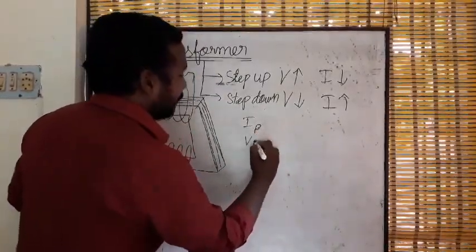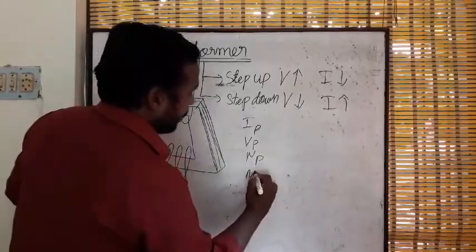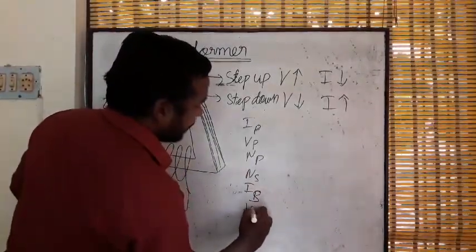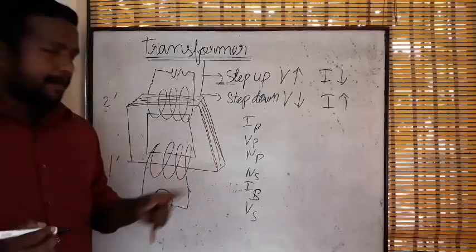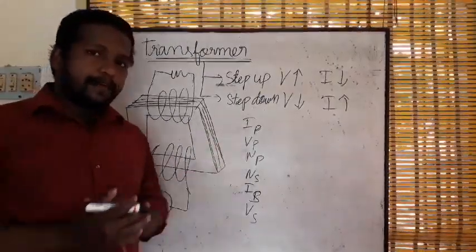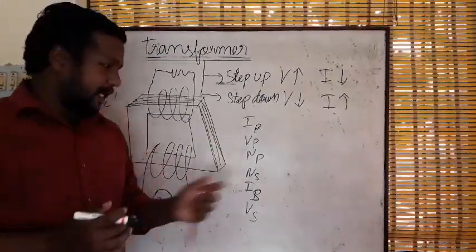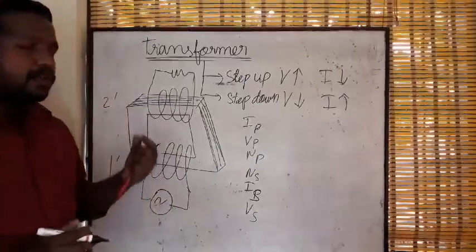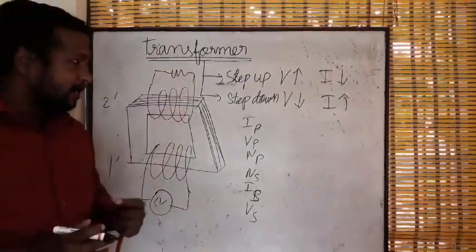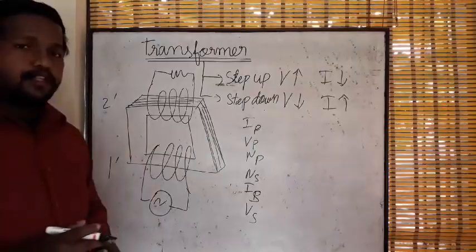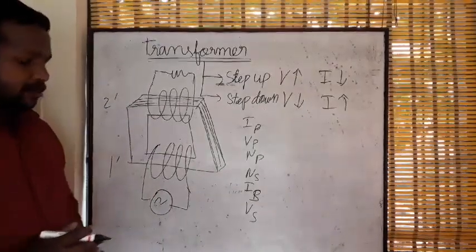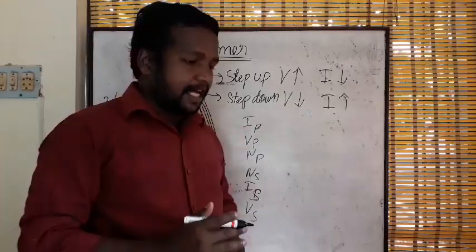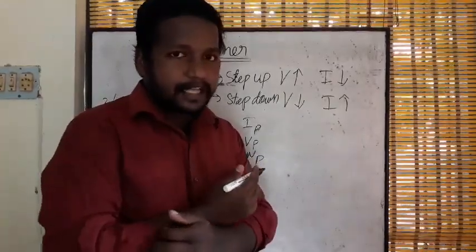The variables are: Ip — current in the primary coil, Vp — voltage in the primary coil, Np — number of turns in the primary coil, and Ns, Vs, Is for the corresponding secondary coil quantities. We have learned the types of transformer and the working principle. Now, regarding the ideal transformer — an ideal transformer does not actually exist.